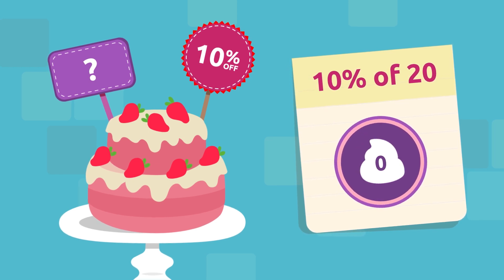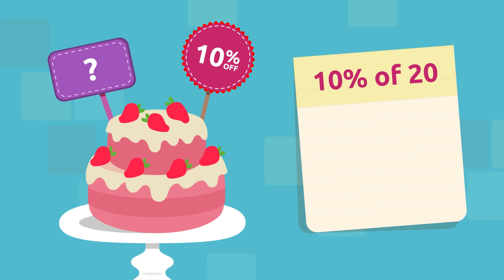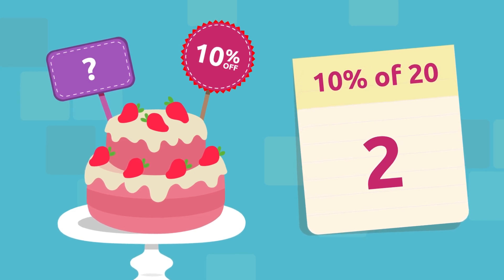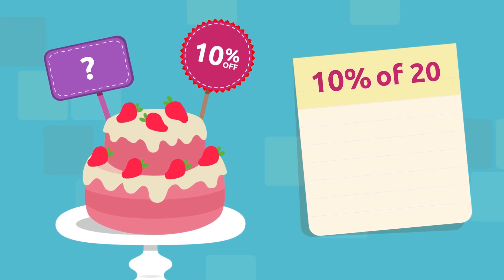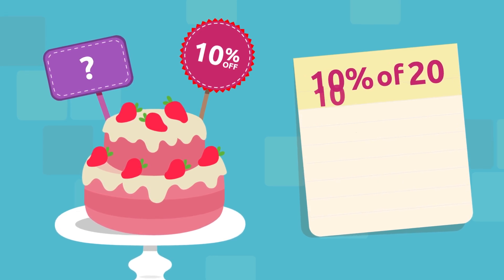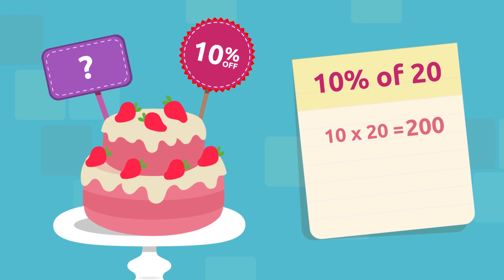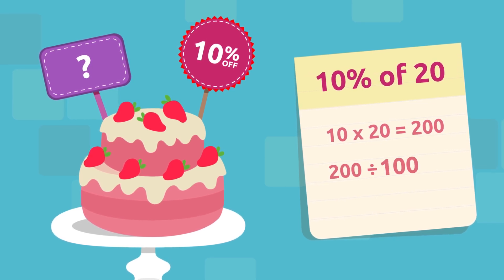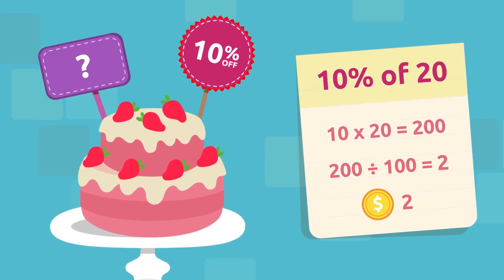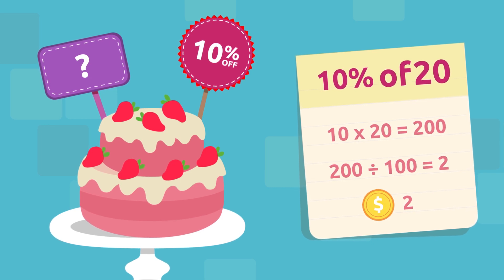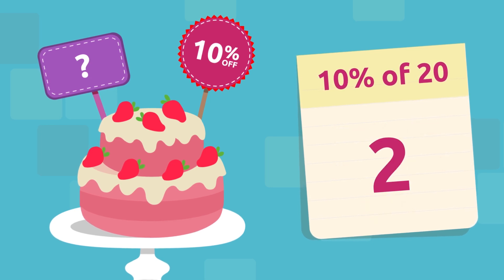Do you have the answer? 10% of 20 is 2. Let's see: 10 times 20 equals 200, and 200 divided by 100 equals 2. If 10% of 20 is 2, each strawberry cake comes with a discount of $2.